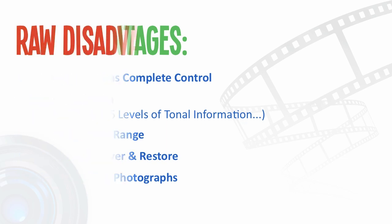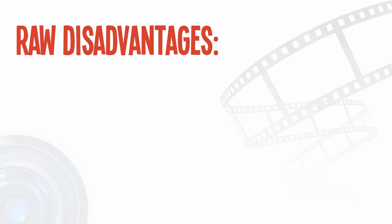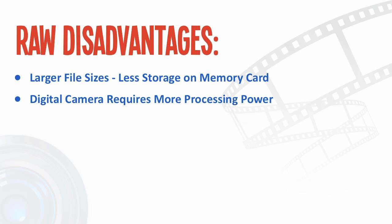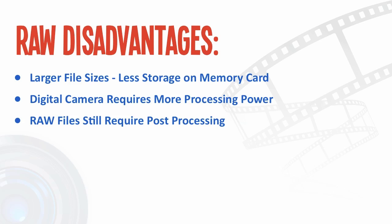One drawback of shooting in RAW at full resolution is the associated larger file sizes, which take up more room on your memory card and reduce how many photos you can store at any one time. The bigger file sizes also mean your camera requires more processing power and time to save photos to the memory card. Because RAW files are linear and unprocessed, they still need post-processing before viewing or printing. Larger file sizes also require more computer processing power when editing, which can be a drawback if you have a slow computer.